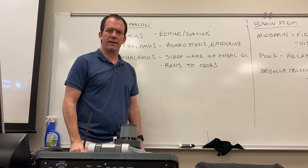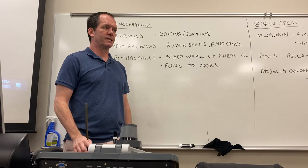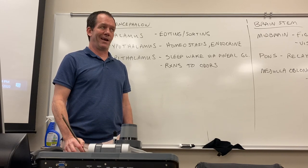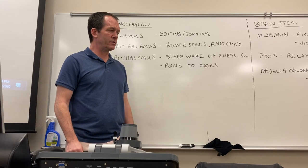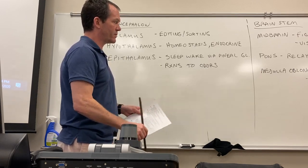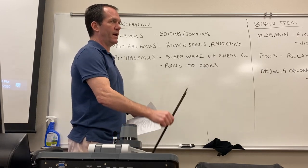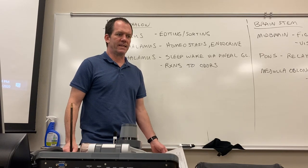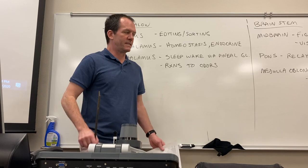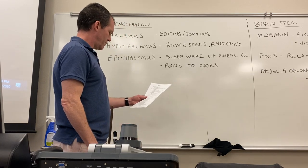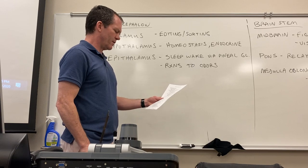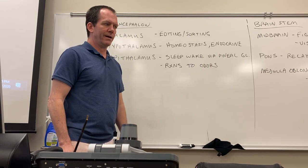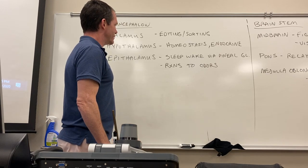The hypothalamus is a homeostatic and endocrine region. It's connected to the pituitary, which produces or stores around eight or more hormones. The hypothalamus dictates the release and manufacture of those hormones, in addition to controlling basic homeostatic functions like the autonomic nervous system, body temperature regulation, and hunger.